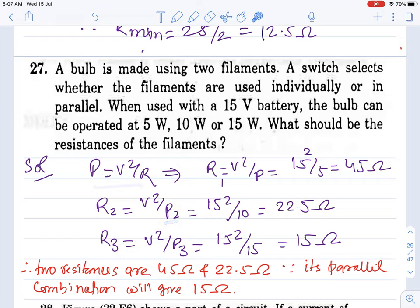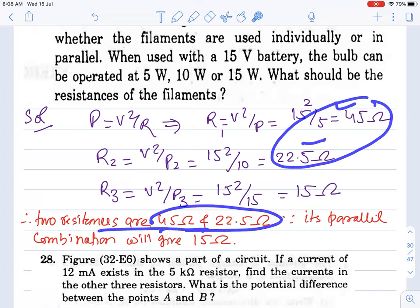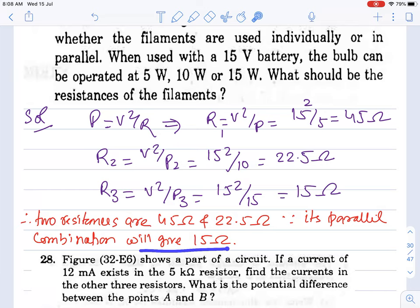Of the bulb, we need to figure out which two combinations. In first case, power P = V²/R, so R = V²/P = 15²/5 = 45 ohms. Second case: power 10W, so R₂ = V²/P₂ = 15²/10 = 22.5 ohms. Third case: power 15W, so R₃ = V²/P₃ = 15²/15 = 15 ohms. Two resistances are 45 and 22.5 ohms. The parallel combination will give 15 ohms.